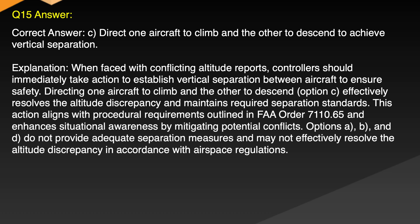Explanation: When faced with conflicting altitude reports, controllers should immediately take action to establish vertical separation between aircraft to ensure safety. Directing one aircraft to climb and the other to descend effectively resolves the altitude discrepancy and maintains required separation standards. This action aligns with procedural requirements outlined in FAA Order 7110.65 and enhances situational awareness by mitigating potential conflicts. Options A, B and D do not provide adequate separation measures and may not effectively resolve the altitude discrepancy in accordance with airspace regulations.